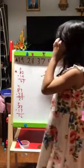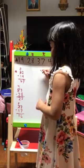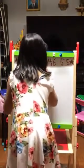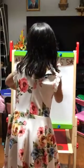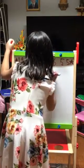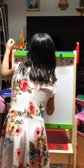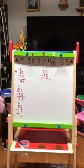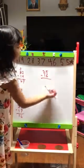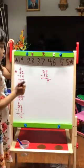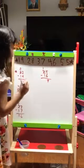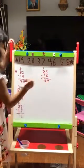The next problem is 25 minus 16. We look at 5 and 6. 5 can't subtract 6, so we remember 6's partner, which is 4. We add 4 to 5 and we get 9. Since we did that one time, 2 goes down by 1, which is 1. 1 minus 1 equals 0. So your answer should be 9.